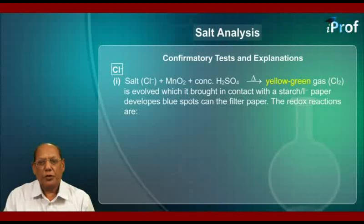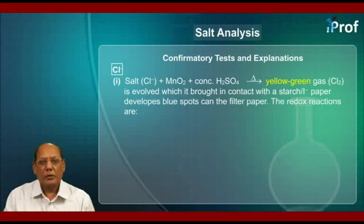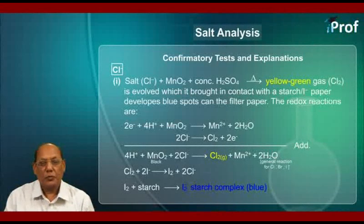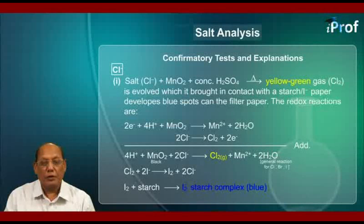This chlorine gas, if brought in contact with a starch iodide paper, develops blue spots on the filter paper. The redox reactions are: 2e⁻ + 4H⁺ + MnO2 giving Mn²⁺ + 2H2O. And the second half is: 2 chloride ion giving Cl2 plus 2 electrons.